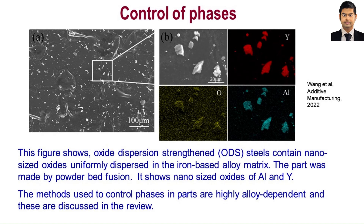Here we show the phases in oxide dispersion strengthened (ODS) steels that contain nano-sized oxides. They have excellent thermal stability and are uniformly dispersed in the iron-based alloy matrix. This figure shows nano-sized oxides of aluminum and yttrium in a part made by laser powder bed fusion. Oxides of titanium, iron, and chromium are also common.